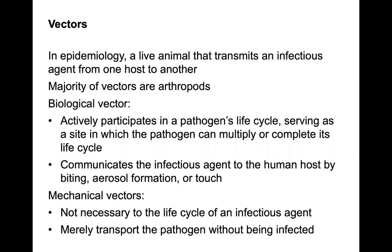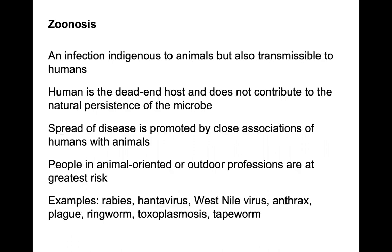In epidemiology, a vector is a live animal that transmits an infectious agent from one host to another. The majority of vectors are arthropods. A biological vector actively participates in a pathogen's life cycle, serving as the site where the pathogen can multiply or complete its life cycle. A mechanical vector does not contribute to the life cycle of the infectious agent. Zoonotic infections are infections indigenous to animals but transmissible to humans — rabies is a great example.